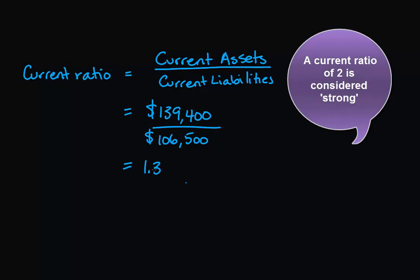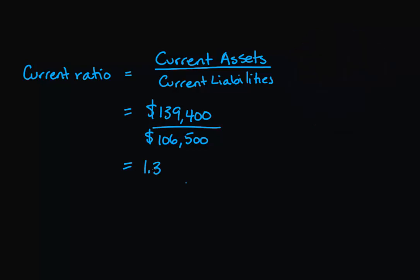So we want double the current assets of current liabilities that we have. If a current ratio is increasing, it means the current assets in proportion to current liabilities are increasing.